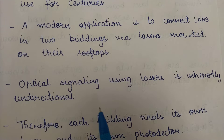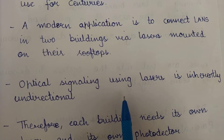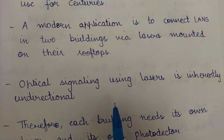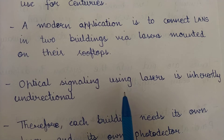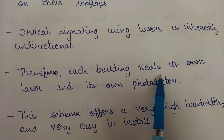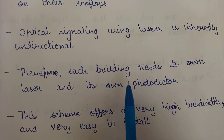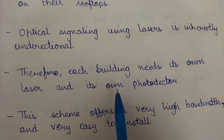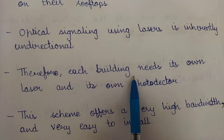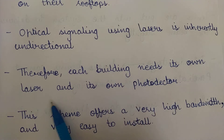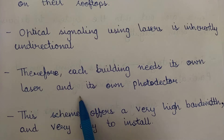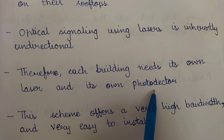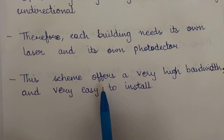Optical signaling using lasers is inherently unidirectional — it can travel in only one direction and not in all directions at the same time. If it is going in a straight line, it will go in a straight line only. Therefore, each building needs its own laser and its own photo detector. Since it is unidirectional, each building that wants to connect its LANs using optical signaling needs its own laser mounted on the rooftop and its own photo detector to detect these optical signals.